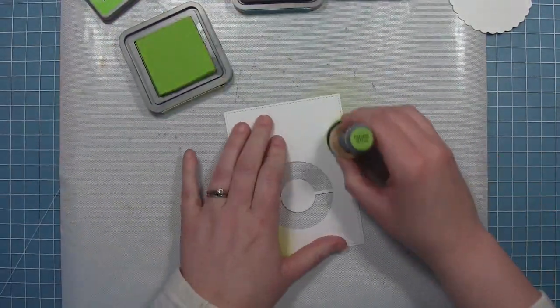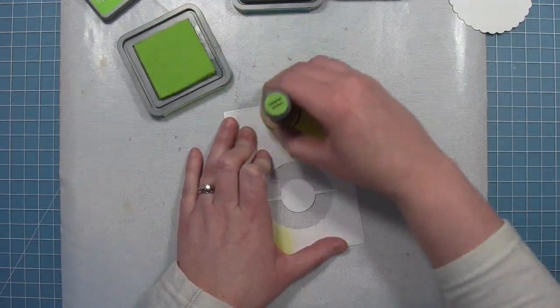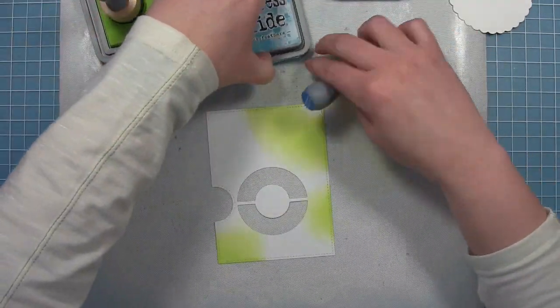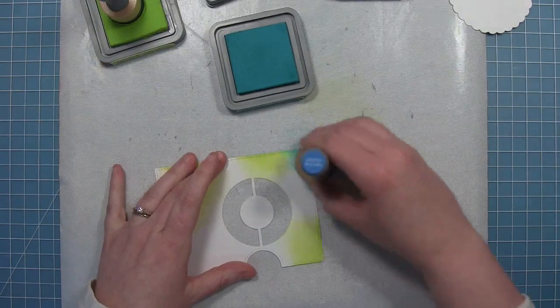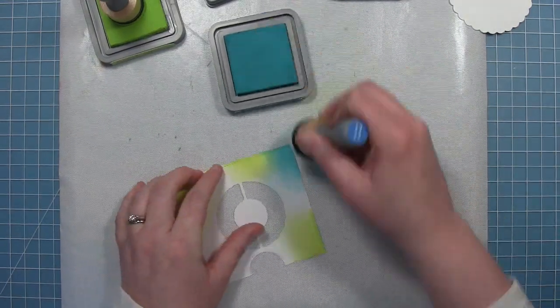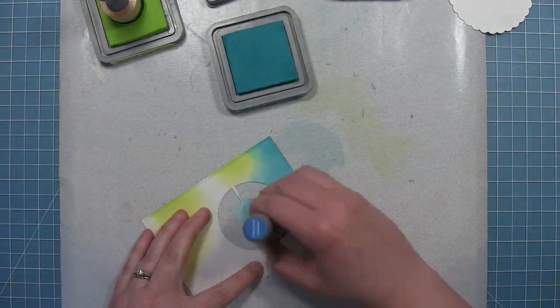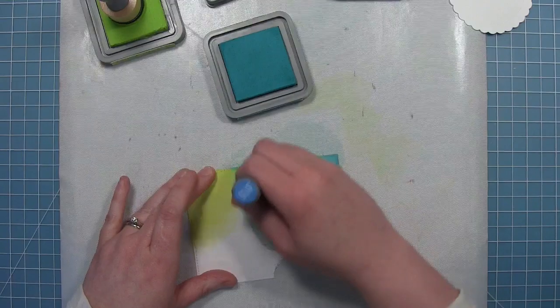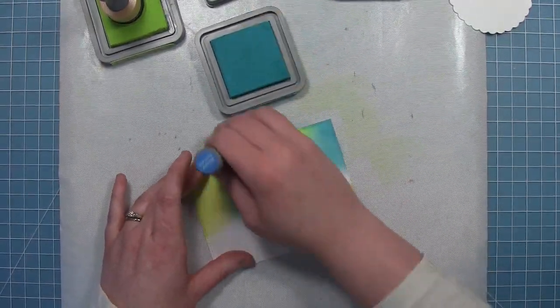Now I'm going to do some ink blending onto this panel, and I'm going to speed this up so you can see all my blending. I'm going to use some Distress Oxide inks: Twisted Citron, Peacock Feathers, and Mermaid Lagoon. I'm being very careful when blending in the center of that circle because those two small pieces of paper are what's holding that center.